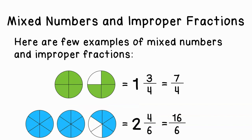Here are two more examples. In the first one, we have one whole model completely filled in — that's our whole number of one — and then the second model represents three fourths, so one and three fourths. Or if we count all of the green pieces, we get seven, so seven fourths. In the bottom example, the models are divided into sixths. We have two whole ones and then four sections shaded, so two and four sixths. Or counting all of the blue pieces gives us sixteen, so sixteen sixths.